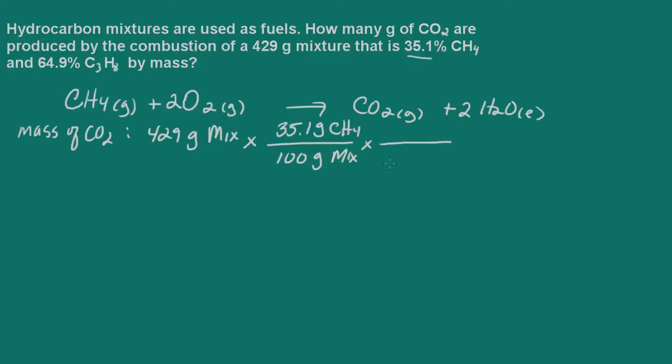Now, we convert the grams of methane to moles of methane. So one mole of methane is 16.4 grams. And then we need to use our balanced chemical equation to relate the moles of methane to the moles of carbon dioxide.